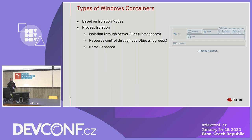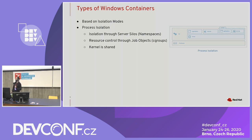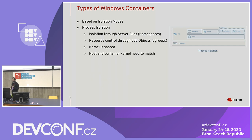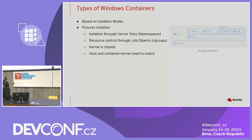With process isolation, the kernel is shared — when the container is running, it is actually sharing the kernel on the host. A key difference here is that Microsoft claims to give you no security guarantees for using containers with process isolation in a multi-tenant environment. There's also an added restriction: your host and container kernel have to match. So if you created your container on Windows Server 2019, you can only run it on Windows Server 2019.